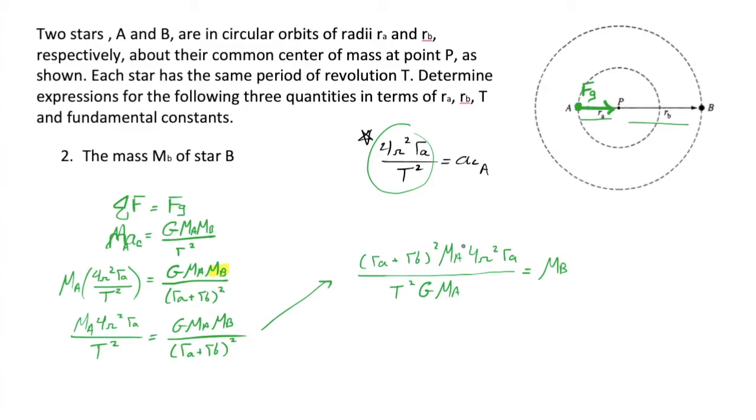GMA, so GMA, and at that point, we have that equal to MB, all nice and isolated. We never needed to know mass A, because that is canceling out. And I guess one of the ways I can write this with the numbers coming first, that tends to be how it looks best. We have 4 pi squared RA plus RB squared over T squared G is equal to MB, and we are done.